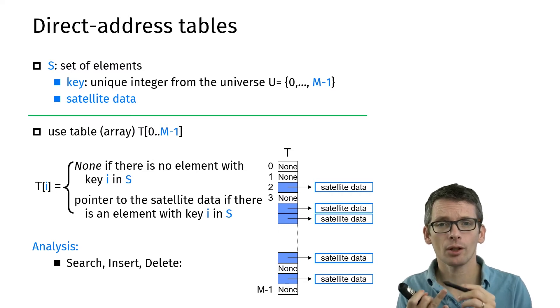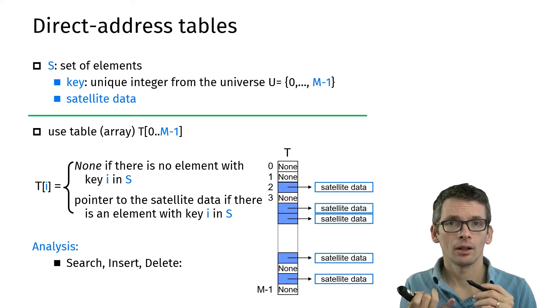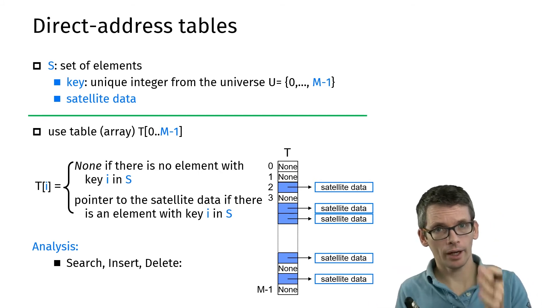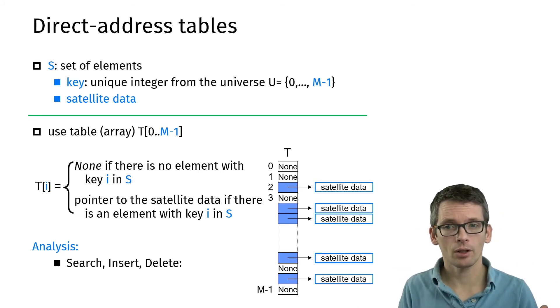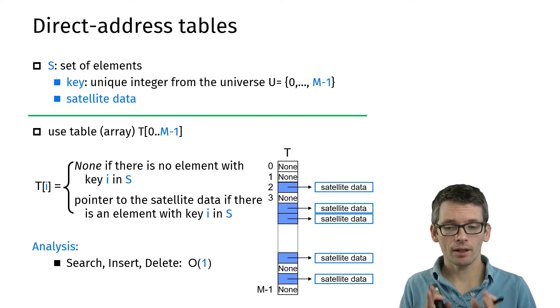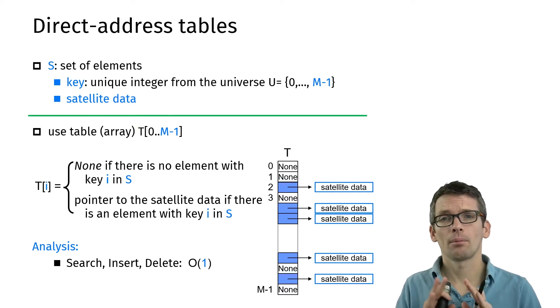So how efficient is that? How efficient is searching, inserting, and deleting? How do I search? I get the key, I look into the table—it takes constant time. Insert, delete also. I can just write into the table or remove something from the table. Everything takes constant time. Perfect.